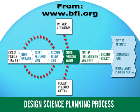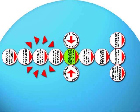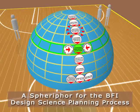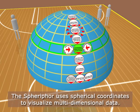The design science planning process, taken from BFI.org, is used. A Spherophore is applied to the process diagram and then applied to the dome — a Spherophore for the design science planning process.